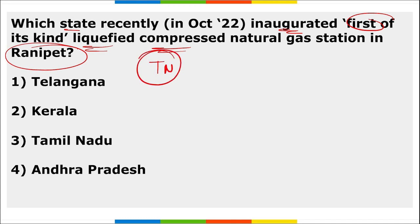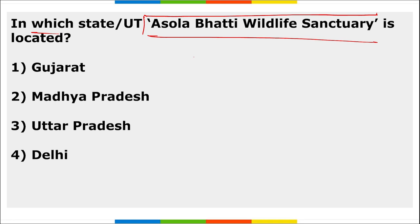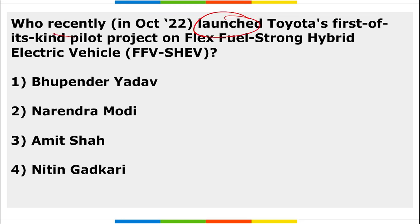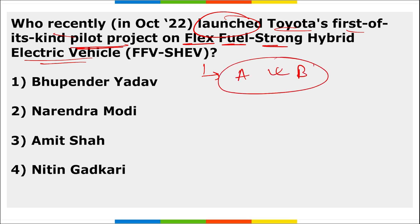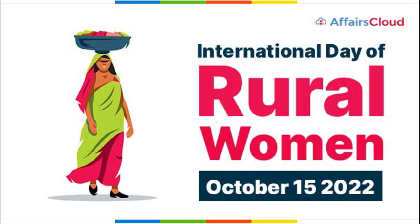Tamil Nadu recently inaugurated the first-of-its-kind Liquefied Compressed Natural Gas facility in Panipat. Asola Bhatti Wildlife Sanctuary is located in Delhi — its Chief Minister is Arvind Kejriwal and Lieutenant Governor is Vinay Kumar Saxena. Nitin Gadkari launched Toyota's first pilot project on Flex Fuel Strong Hybrid Electric Vehicle (FMSHE V), which can run on one fuel, another, or a mixture of both.